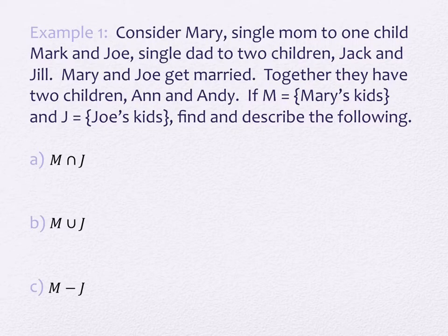This works fantastic for the next example. Consider Mary, single mom to one child, Mark. And Joe, single dad to two children, Jack and Jill. Mary and Joe get married. Together, they have two children, Ann and Andy. We're going to let the capital set M describe Mary's kids, and capital set J describe Joe's kids. And we're going to think about this like biological kids. So that's the word I'm going to use. We're going to describe this in terms of biological kids.